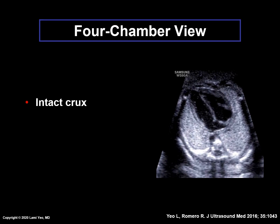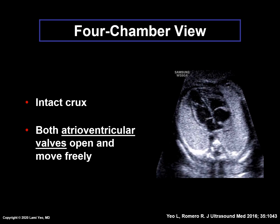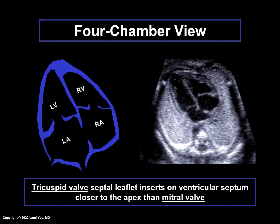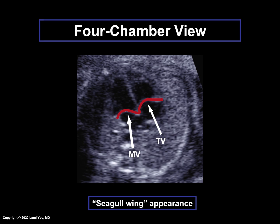The crux should be intact. Both atrioventricular valves should open and move freely as seen in the video clip. Normally, the atrioventricular valves are offset in which the tricuspid valve septal leaflet inserts on the ventricular septum closer to the apex, as shown by the red arrow, than the mitral valve as shown by the white arrow. This is also known as the seagull wing appearance of the atrioventricular valves since they are not located at the same level.